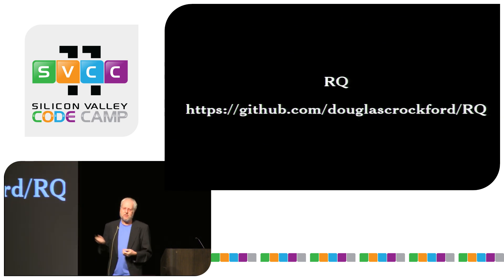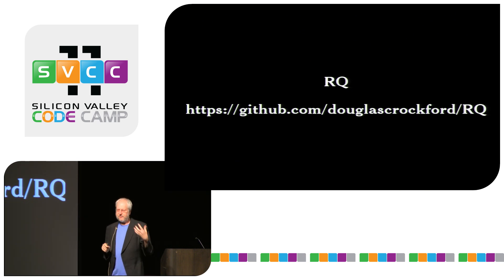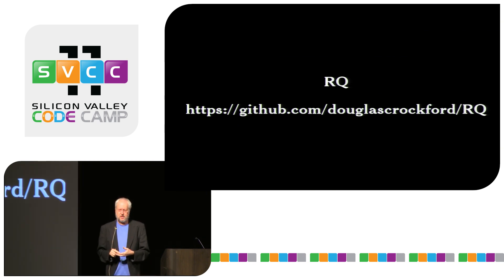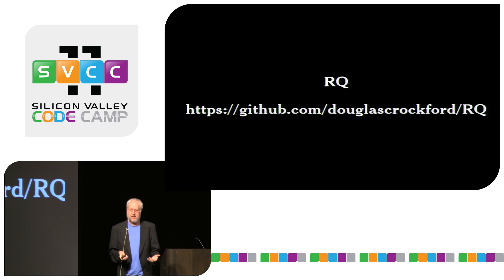I think the better tool is something called RQ — a library that I developed, available for free on GitHub. It uses requester functions — a function which takes a callback and does stuff — which are composable. RQ provides a small library of composition tools to let you do things in sequences, to let you do things in parallel, all fully asynchronous in a really straightforward way.